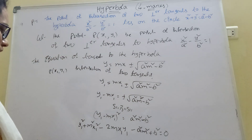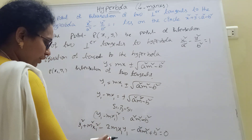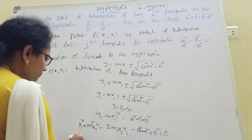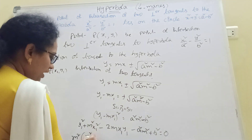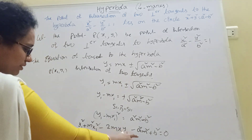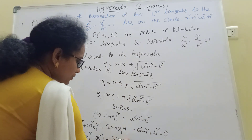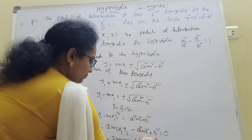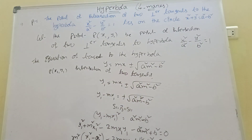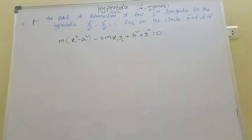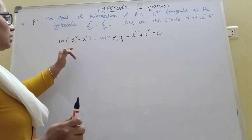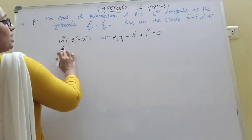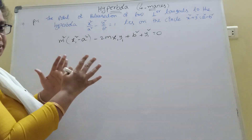Now m² comes common. So the equation becomes: m²(x₁² minus a²) minus 2mx₁y₁ plus (b² plus y₁²) equal to zero. This is a quadratic in m, where m₁ and m₂ are the two roots.